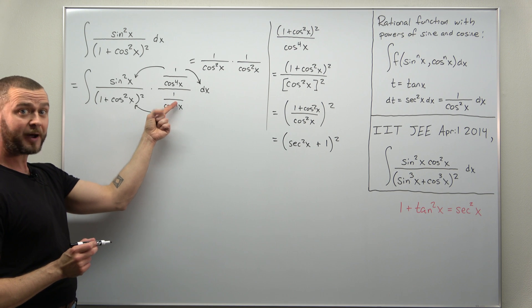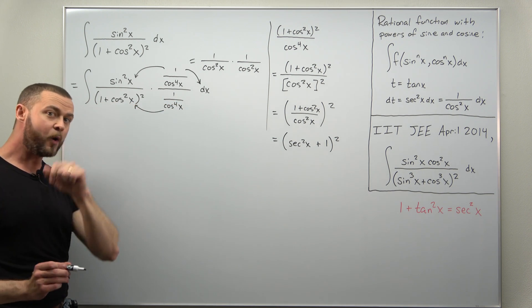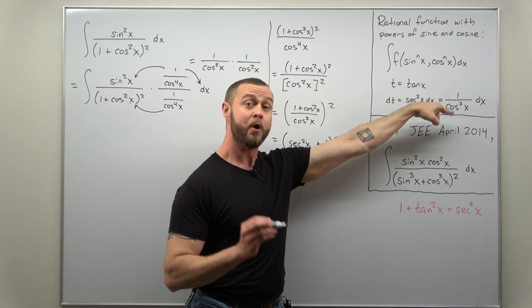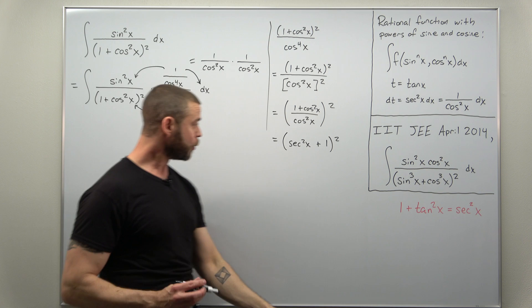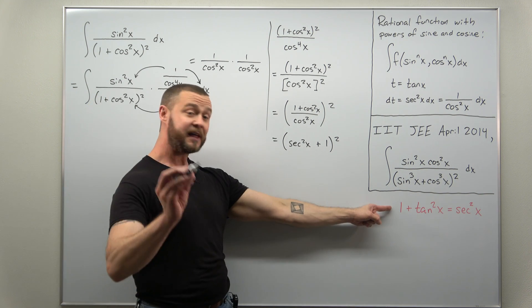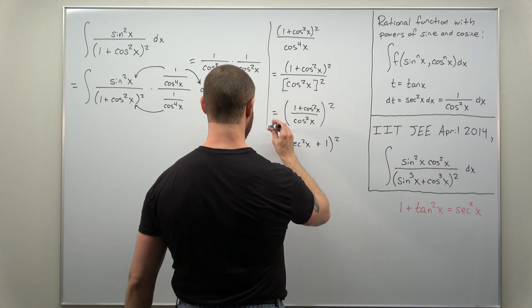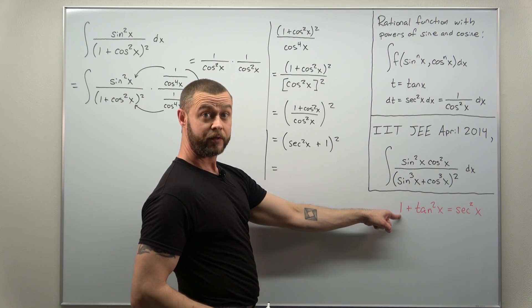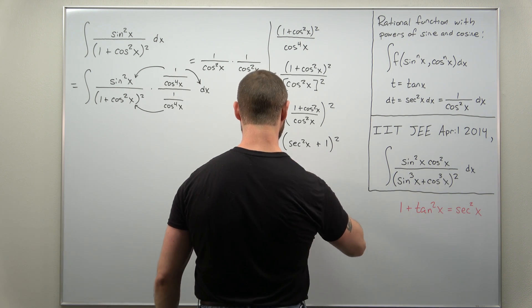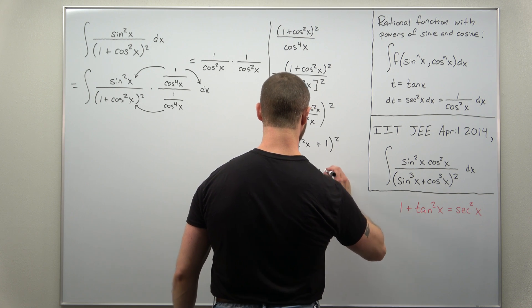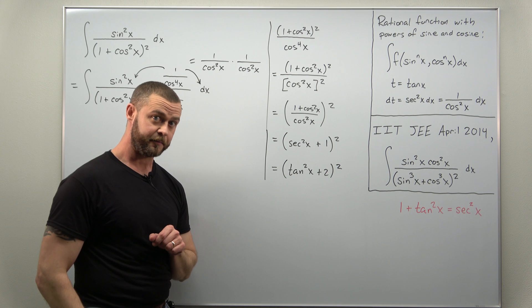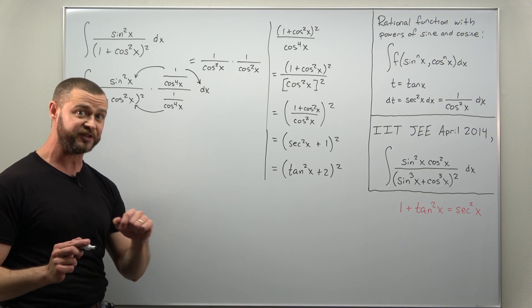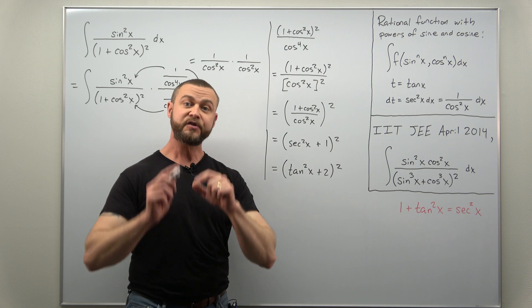Once you take the one over cosine to the fourth power of x and distribute it into the denominator, you want to go one step further. We're making use of the substitution t equals tangent of x, so we need to convert secant squared to tangent squared using the basic Pythagorean identity. Secant squared equals one plus tangent squared. The one here and the plus one inside combine together, so we can write this denominator as tangent squared of x plus two, all squared. That's most of the work for the first part.